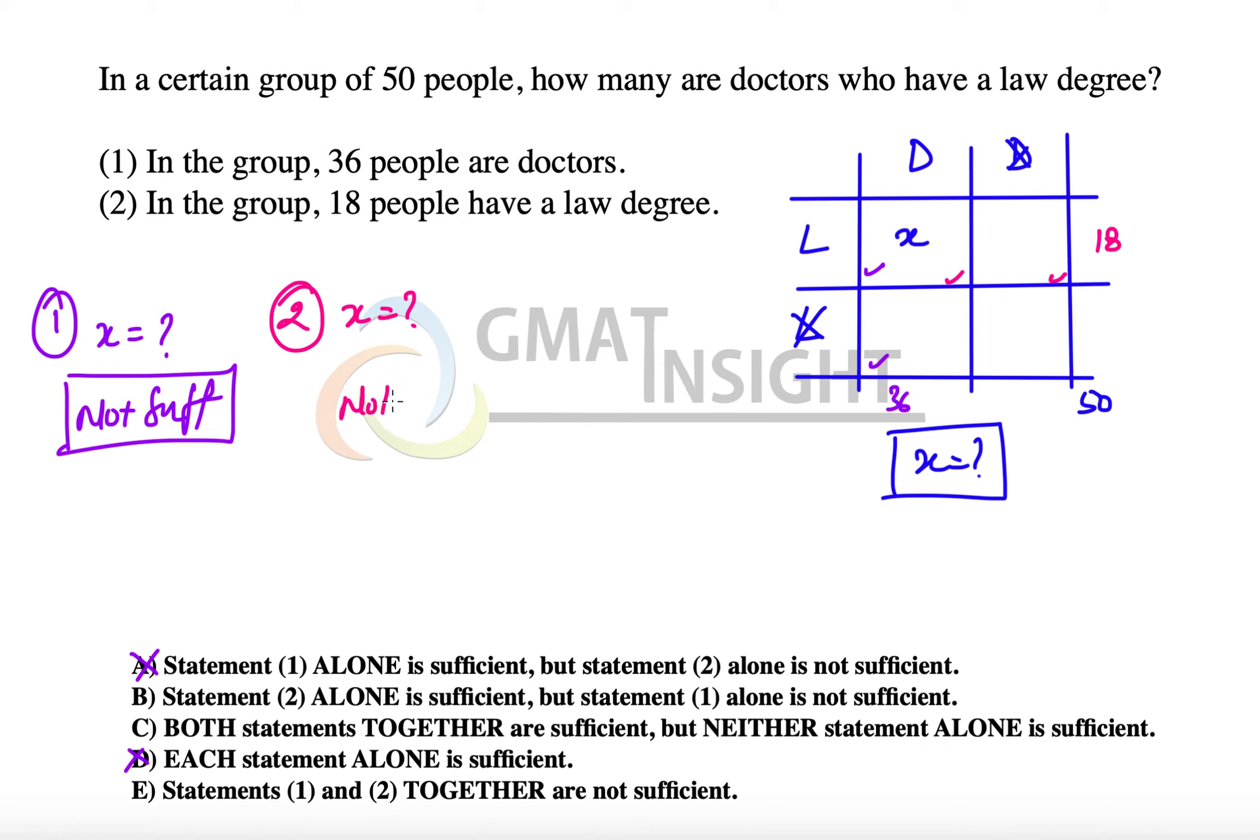So this statement as well is not sufficient to answer the question. Step three is combination of the two statements. Now let's combine - we have 36 here, so 50 minus 36, 14 comes here. We have 18 here, that means 50 minus 18, 32 comes here. Now the question is the value of x.